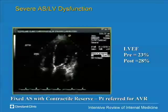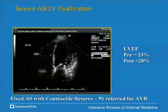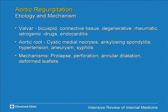If ejection fraction and stroke volume increase with dobutamine, prognosis tends to be better. Now, in the final few minutes, let me talk about aortic regurgitation. Here's an example of AR on Doppler — three-chamber view with a plume of aortic regurgitation. When thinking about AR, consider three things: what's causing it, how severe it is, and its effects on the left ventricle.